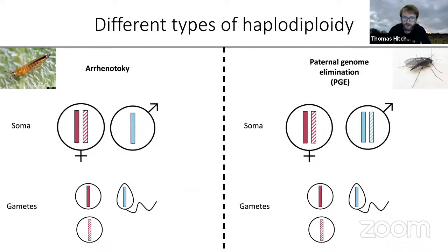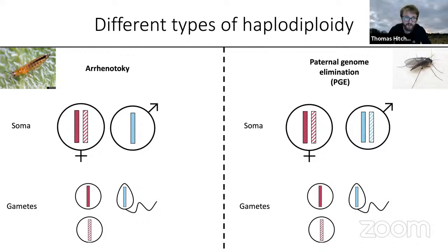Haplodiploid organisms include nematode groups, rotifers, springtails, fungus gnats, wasps, scale insects, thrips, and ambrosia beetles. They are united by an asymmetric inheritance system where males only pass on their maternal-origin genes. There are two main forms: in arrhenotoky (classic haplodiploidy), females form from fertilized eggs containing both maternal- and paternal-origin genes, while males form from unfertilized eggs and only contain maternal-origin genes. Males produce sperm containing only paternal-origin genes.